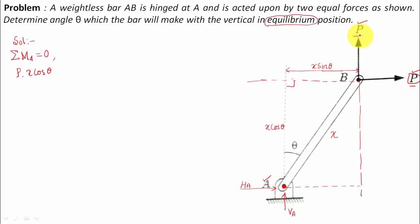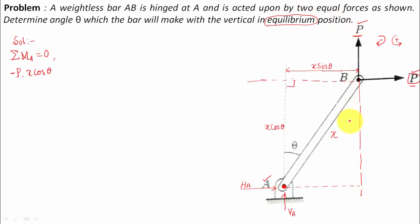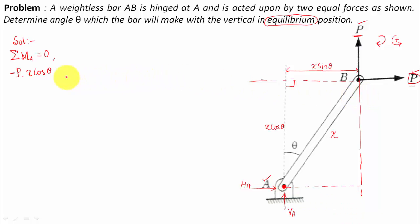A clockwise moment is taken as negative, and an anti-clockwise moment is taken as positive — please remember this. For the vertical force P acting upward, using the right-hand rule you can see it produces a moment in the anti-clockwise sense, which is positive. The perpendicular distance from A is x·sinθ, so this term is +P·x·sinθ.